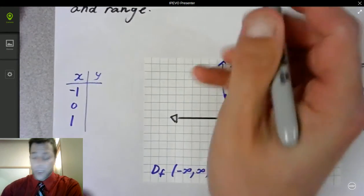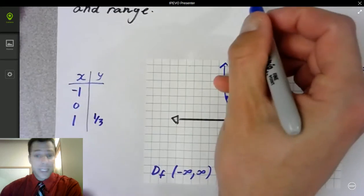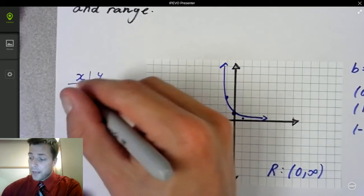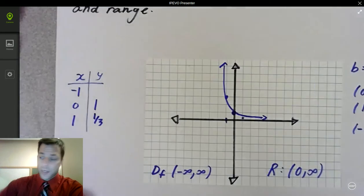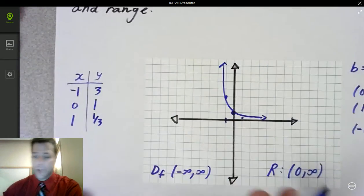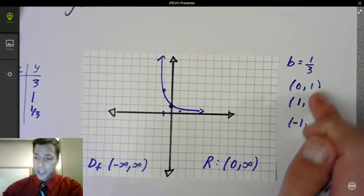1 third to the 1 is 1 third. Anything to the 0 power is 1. And then 1 third to the negative 1, the properties say flip it. So this would be 3. So you can use a table of values. You can try to remember the key point idea.